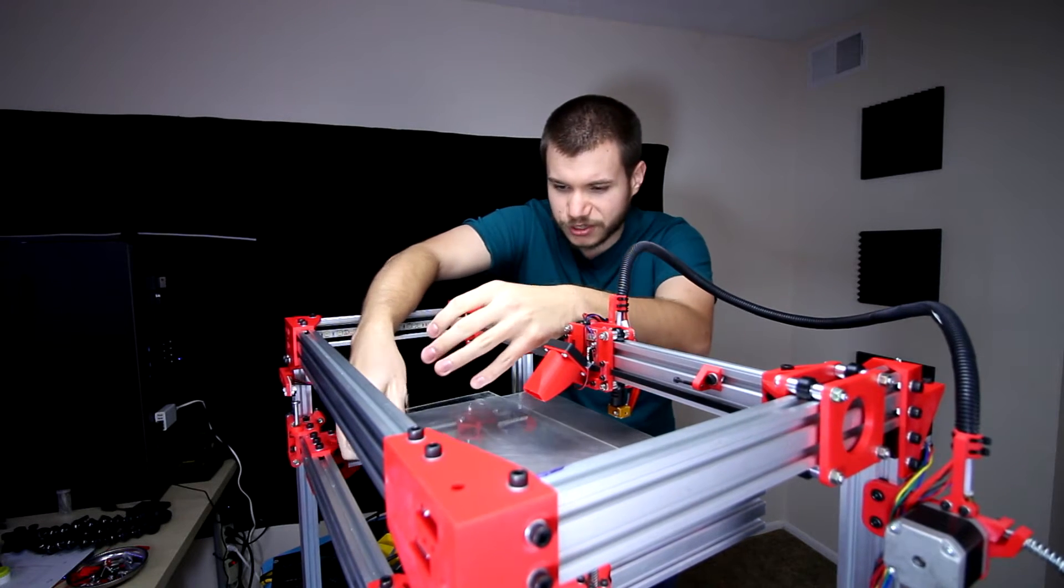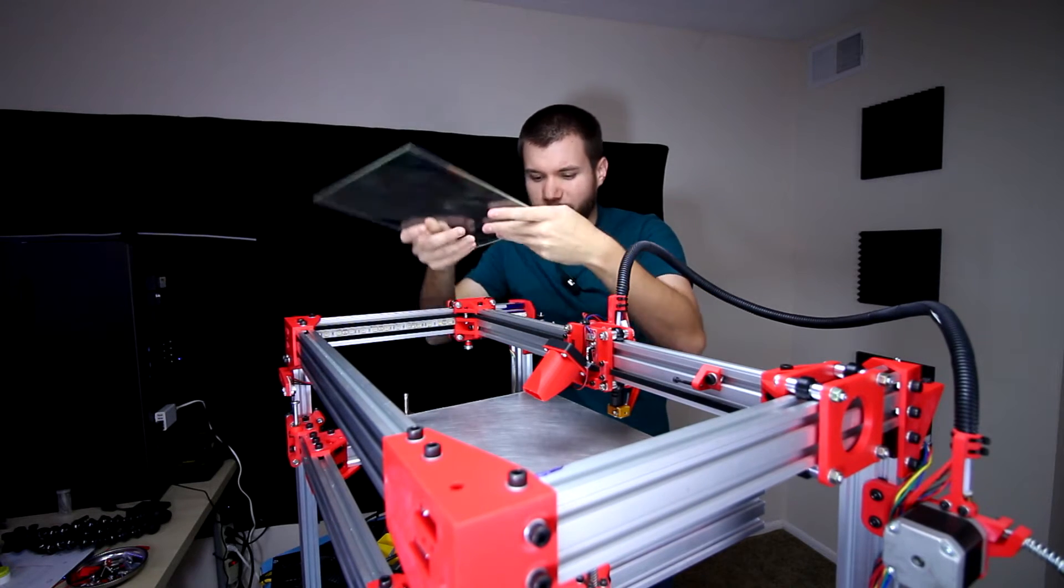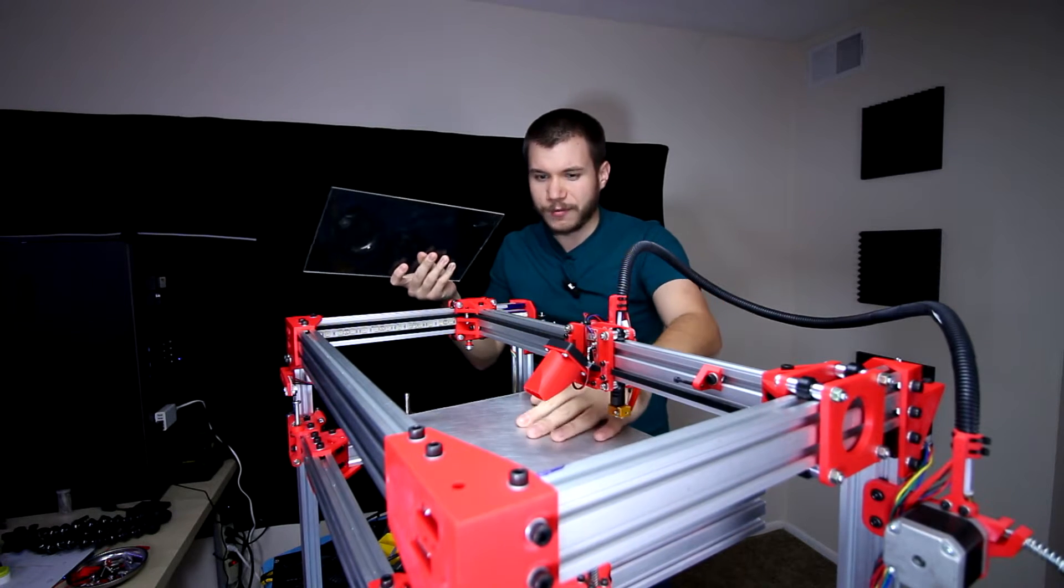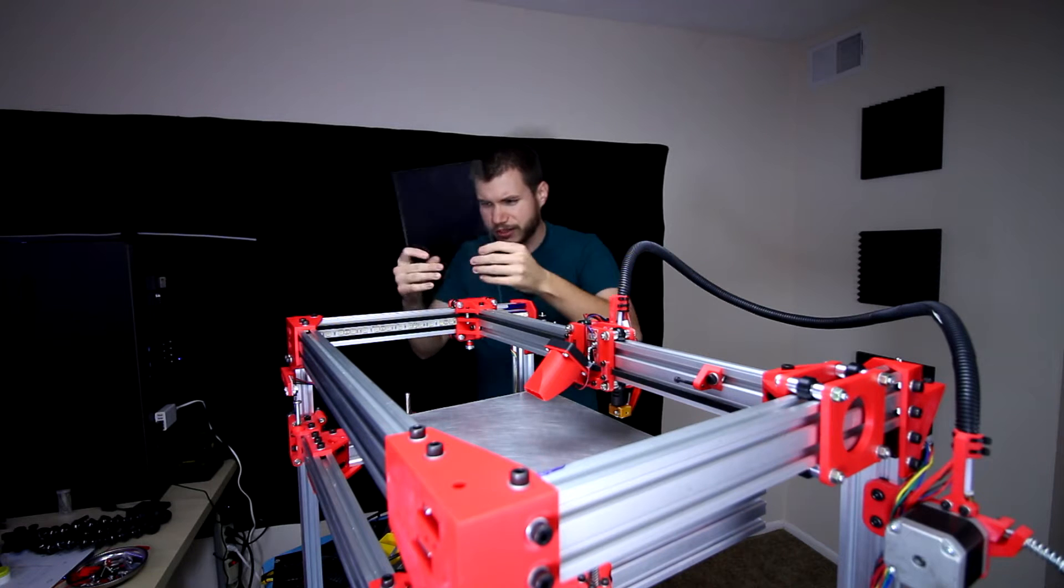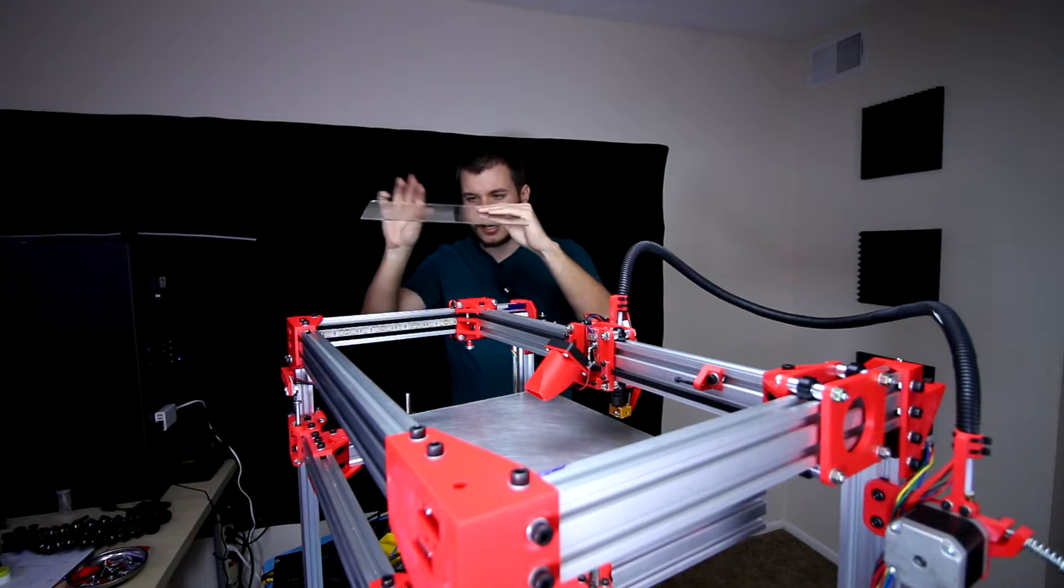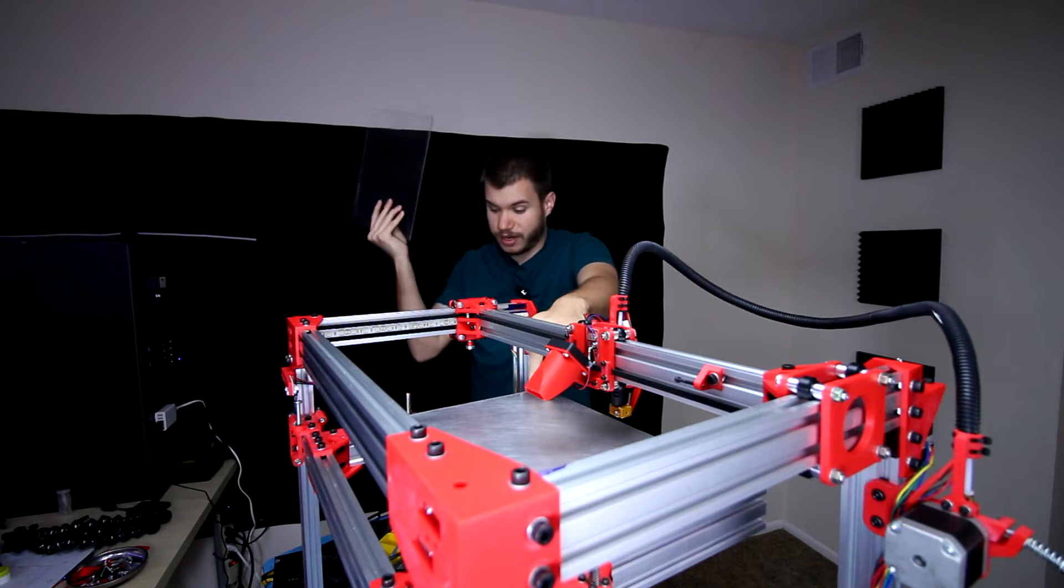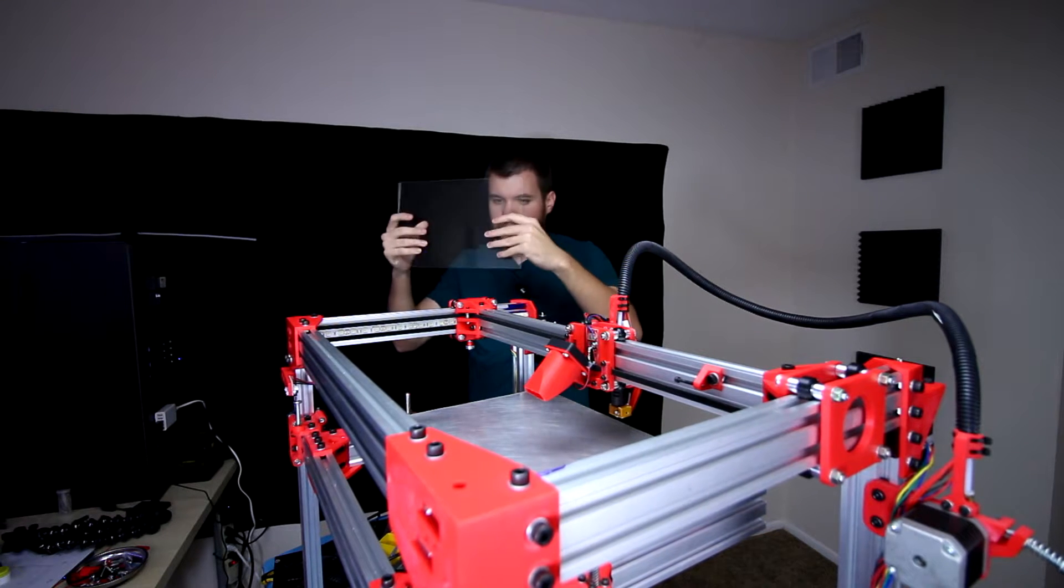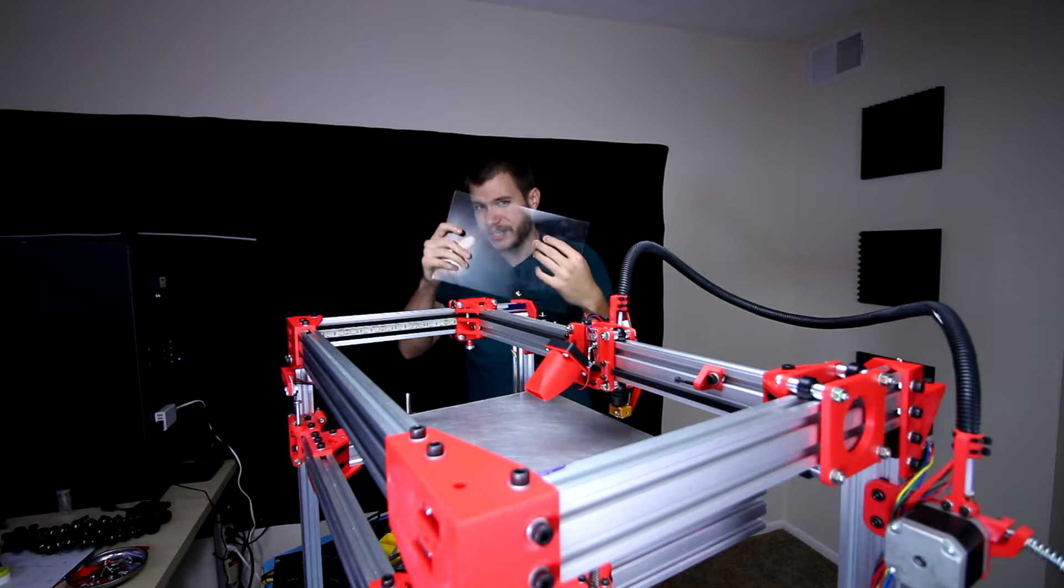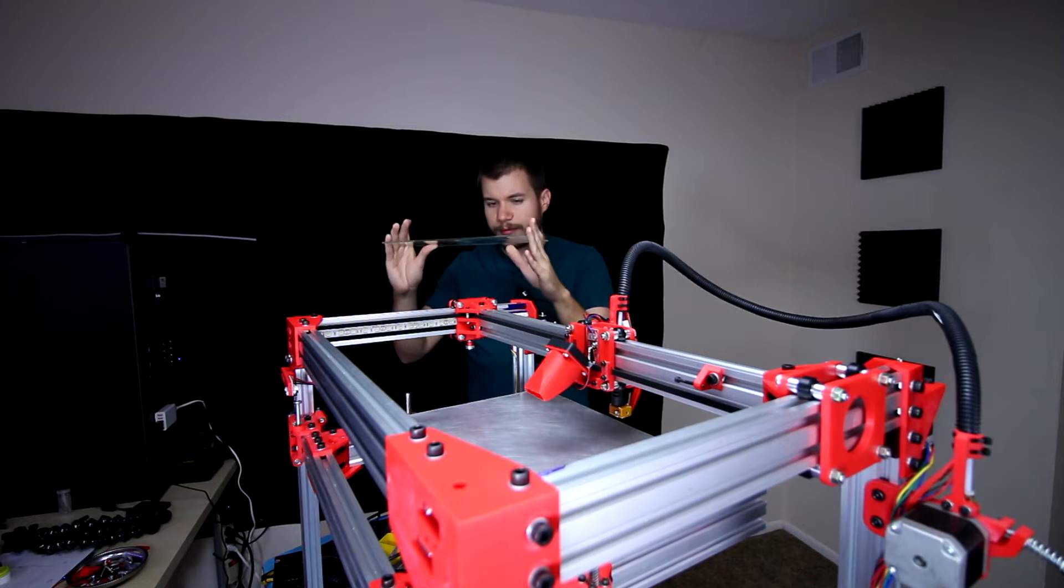First, we start with our bed surface which will be glass on top of whatever bed we have for our printer. I have some rather thick glass for this big printer here, probably the thickest I could find on McMaster-Carr.